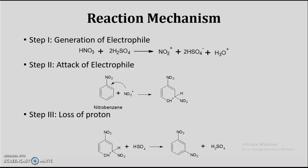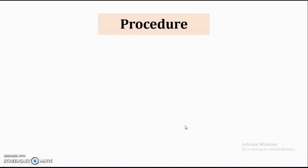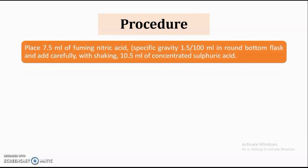In this way, this is the reaction mechanism comprising of 3 steps: one is the generation of electrophile where nitronium ions act as the electrophile, then they attack on our parent compound that is nitrobenzene, and in the final step there will be loss of proton which leads into the formation of M-dinitrobenzene. Now let us see what is the procedure involved in the synthesis of this particular compound.